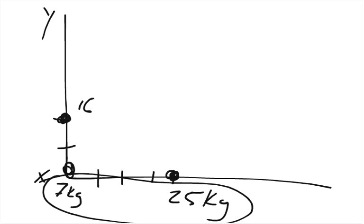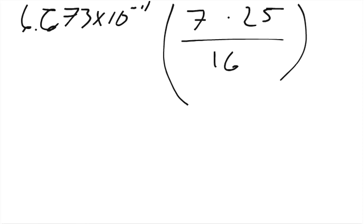So first let's do the gravitational force of the 7 kilogram and the 25 kilogram object. We have 6.673 times 10 to the negative 11th. That's our gravitational constant. We're taking that times mass 1, which was 7, times mass 2, which was 25, over the radius squared. So the radius was 4, so 4 squared is 16. And so we multiply that and we get our force, which equals 7.297 times 10 to the negative 10th newtons.